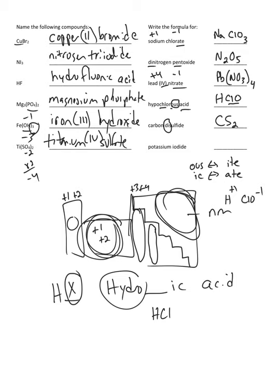Potassium iodide: potassium is K. Iodide comes from iodine, which is element I. Potassium is in group one, so it's plus one. Iodide is a halogen — group 17 — which is minus one almost always. Group 16, the oxygen family, is negative two; nitrogen is negative three. Those are the typical charges based on placement in the periodic table.